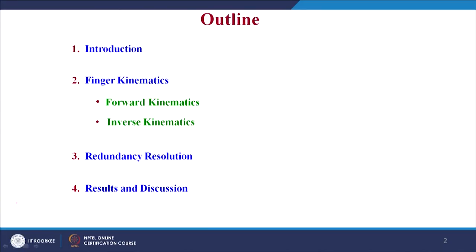Good afternoon. Today we continue with the topic on Redundancy Resolution of the Human Fingers in Cooperative Object Translation. The organization of today's lecture will be as follows: first we have the introduction, then we have the finger kinematics of the index finger, middle finger and the thumb where we will be seeing the forward kinematics and the inverse kinematics. Then we will be seeing the major portion which is the redundancy resolution of these three digits in object translation motion.